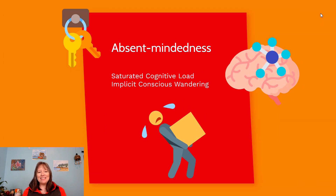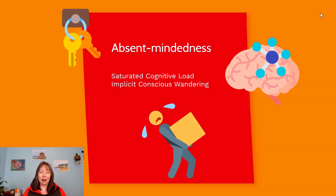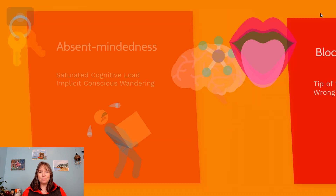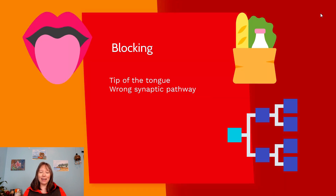Absent-mindedness — we talked about this in unit 5. This is the idea that we have a saturated cognitive load; we can't possibly pay attention to everything. Because of this, our brain cannot encode everything it needs to. If it never encoded something, we can't retrieve it. If you're not paying attention to where you put your keys, you won't be able to find them. This happens when we have a lot of implicit mind-wandering — we're trying to do a task but our mind is somewhere else.